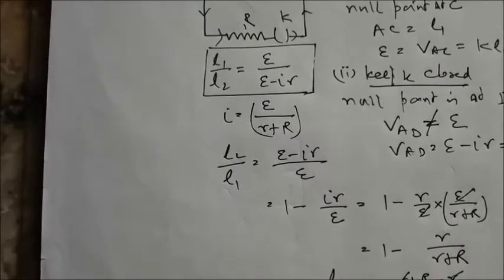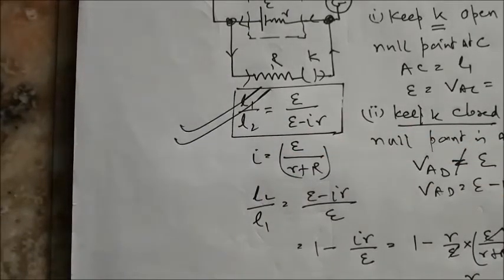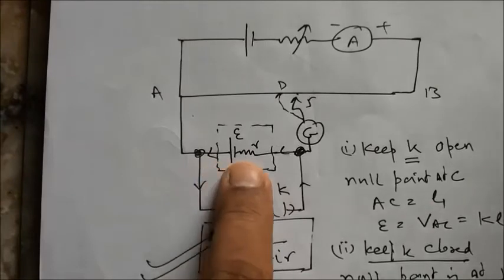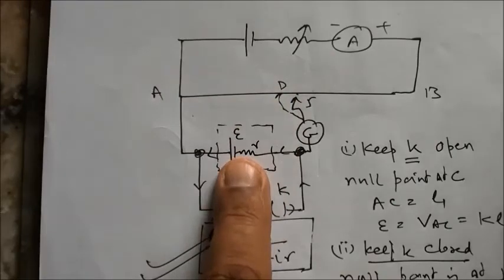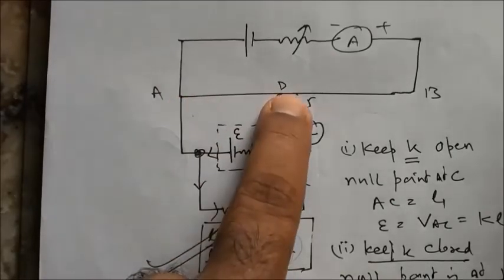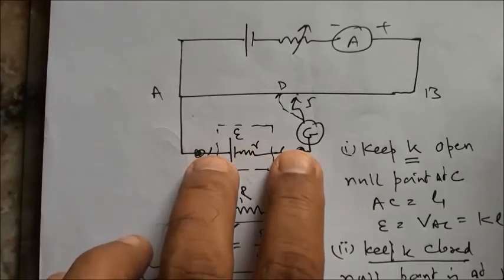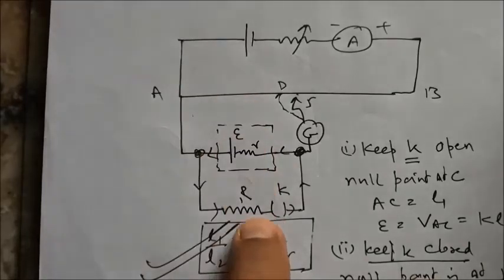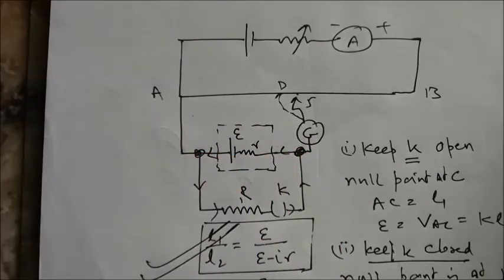When no current is flowing through the external circuit, the potential difference across the cell equals the EMF. But when current flows through it, the potential difference across the terminals is E minus IR — that is the only difference. Whenever you provide a parallel path for current, the potential difference across the terminals is less than EMF when the cell is discharging.